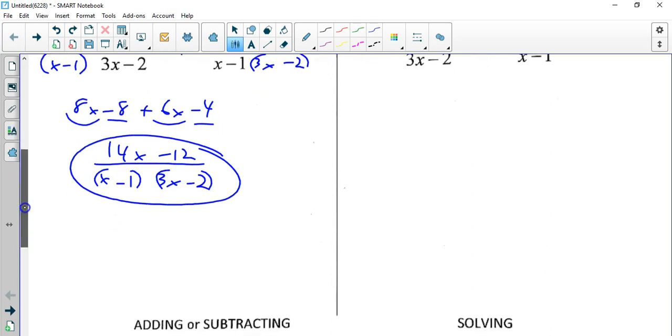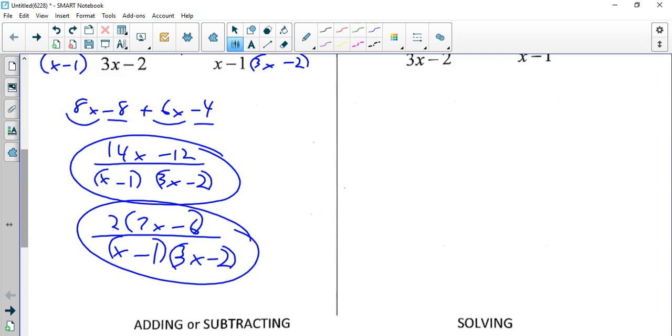So if you wanted to, just to make sure nothing cancels, you factor out 2 and get 7x minus 6, which is the same answer. Just one is completely factored. They both work and nothing cancels.